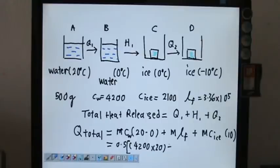The M is already factorized, so we just take Lf 336,000. That would be plus the ice is 2100 and then times 10.